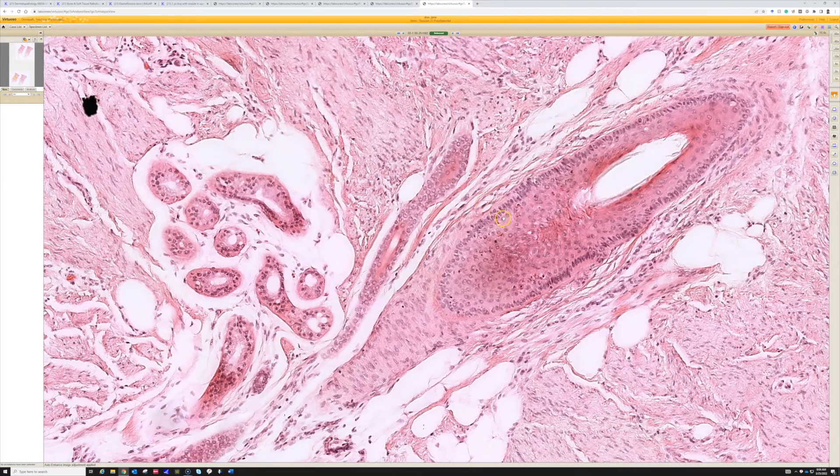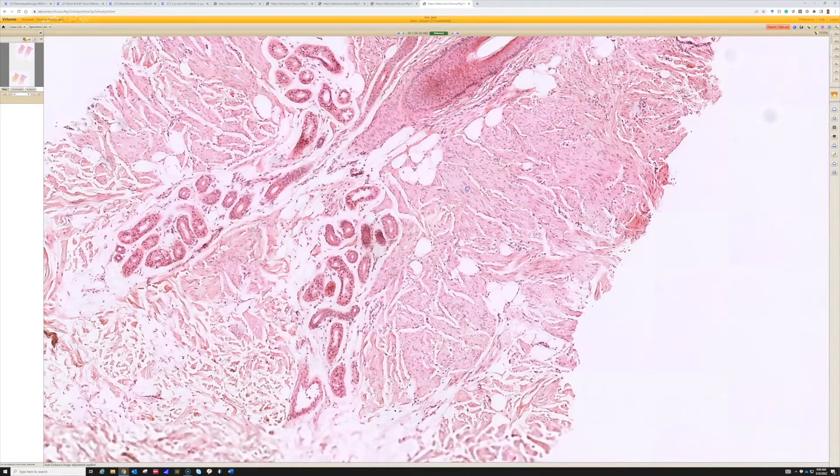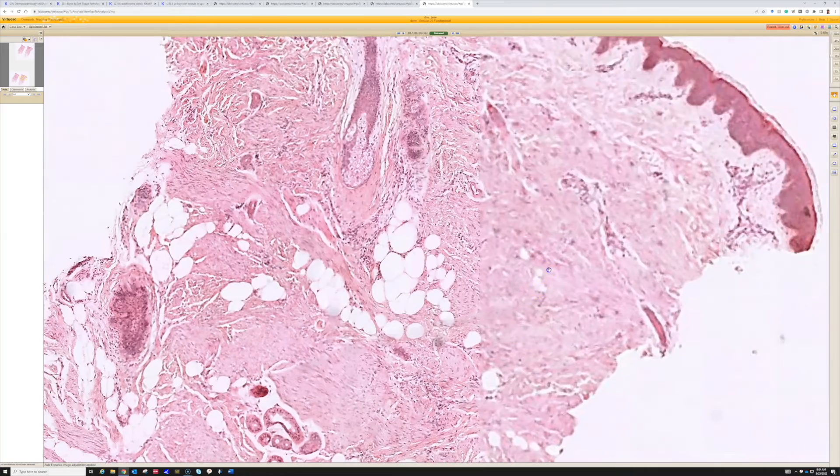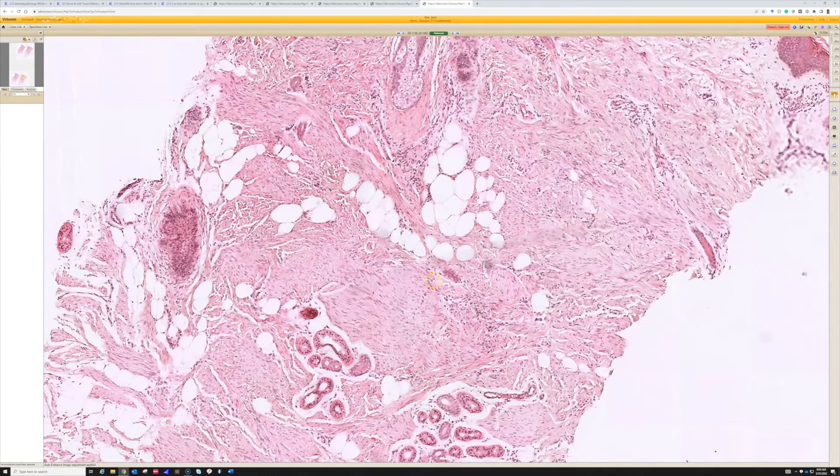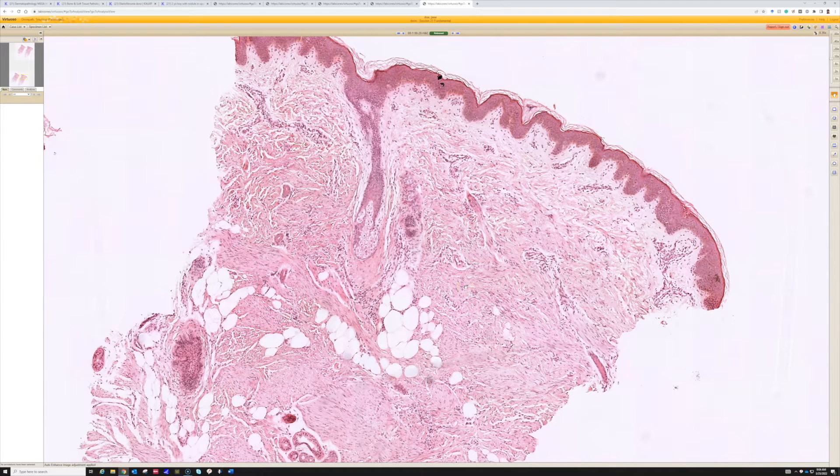They are leaving the adnexal structures totally intact. They're kind of just going in between them, but they're not replacing the adnexa, which is kind of interesting. And so the parallel fascicles of bland spindle cells in pink bundles, that is what we call a dermatomyofibroma.